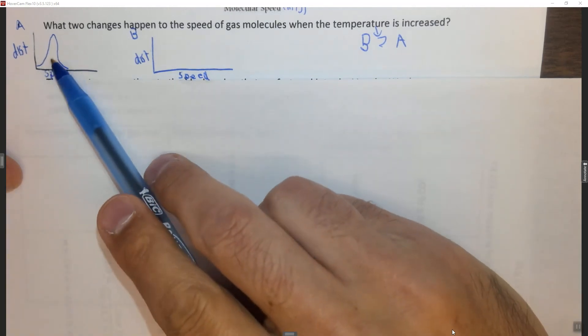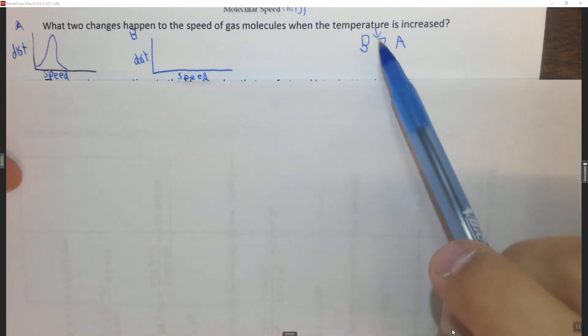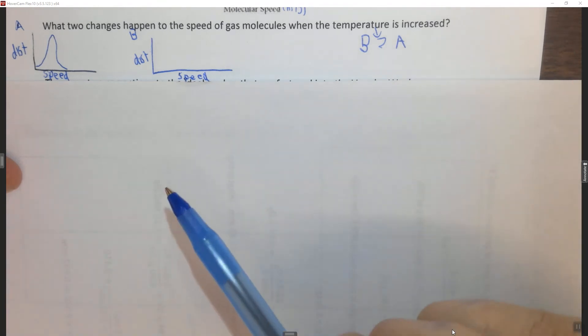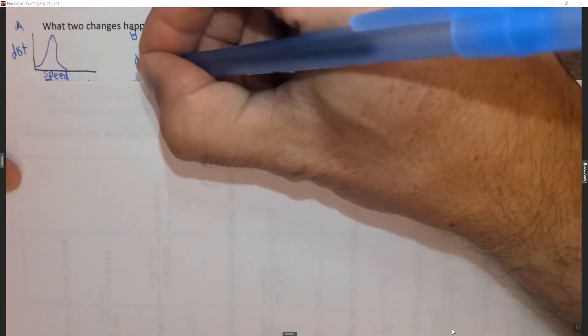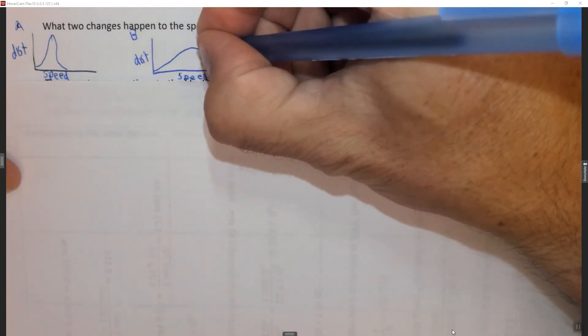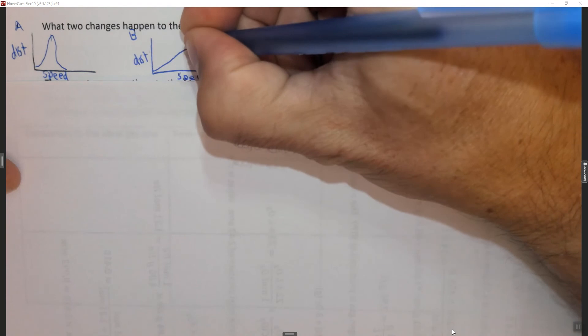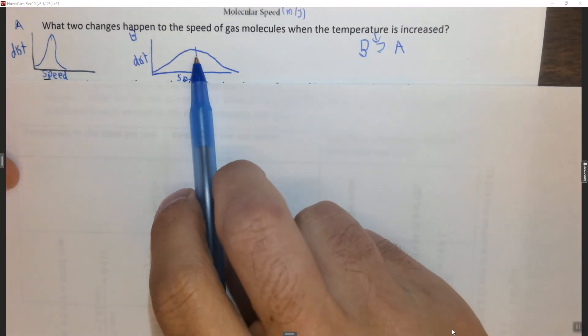Two things happen. One is we know when we heat this up it's gonna exert a greater pressure. In order for it to exert a greater pressure the molecules have to speed up on average. So instead of being this average speed the molecules may speed up like this. So now their new average speed is much higher.